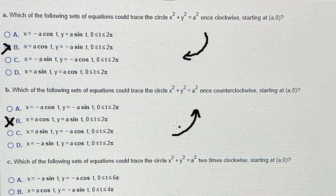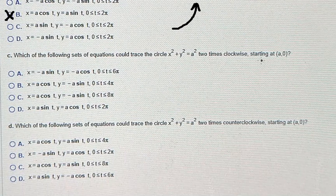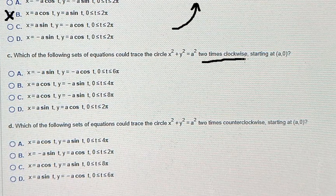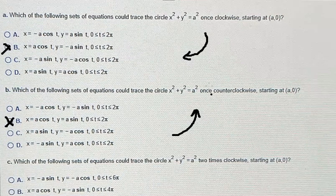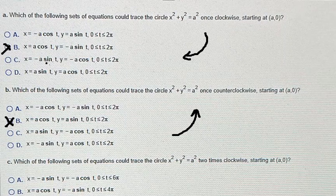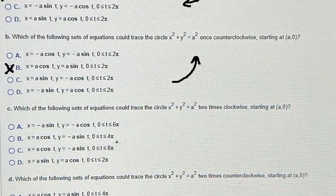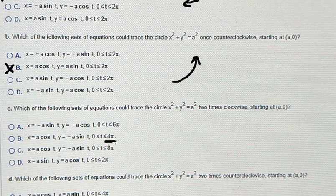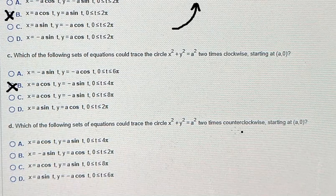In here, this one is two times clockwise. We know that this is clockwise, so there should be the same formula in here, but the interval is about 4π. So that is about b...